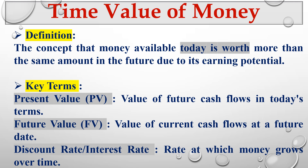The key terms in time value of money are: present value — the value of future cash flows in today's terms; future value — the value of current cash flows at a future date; and discount rate or interest rate — the rate at which money grows over time. I have previous videos explaining how to calculate present and future values.